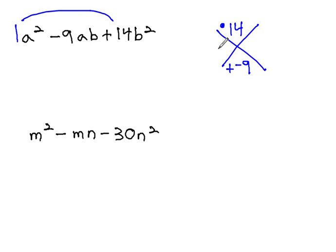One way to multiply to 14 is 2 times 7. Those would give us positive 9, unless they were both negative. If they're both negative, we get negative 9 when adding, and a negative times a negative is a positive. We found the pair of numbers that will make this work.